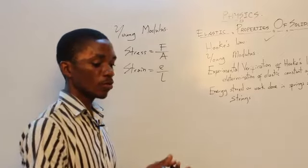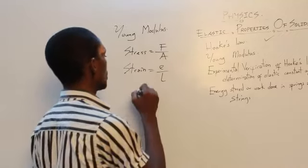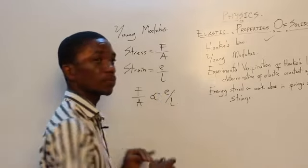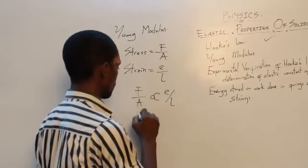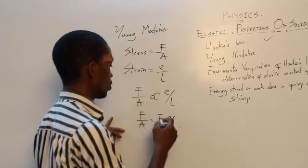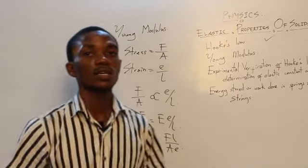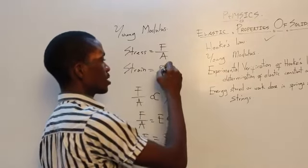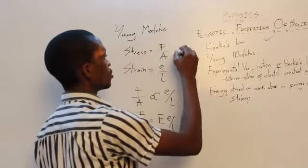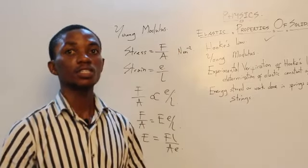Young's Modulus shows the relationship between stress and strain. The original statement says that stress is proportional to strain. When we put it all together, we have F/A equals capital E, where capital E represents Young's Modulus, and we calculate it as FL over AE. Note that strain has no units because it is metres divided by metres — just a ratio. Stress is in newtons per metre squared, so Young's Modulus also comes out as newtons per metre squared.